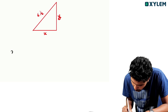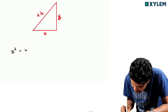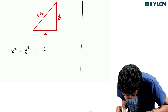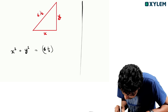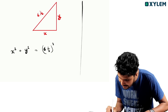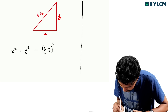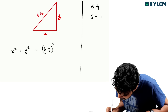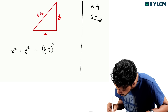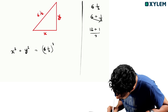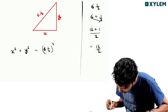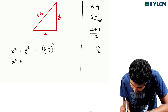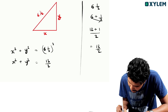If you look at that, x squared plus y squared is equal to the hypotenuse squared, which is 6 and 1 by 2 squared. That is 6 plus 1 by 2, so x squared plus y squared equals 15 by 2.